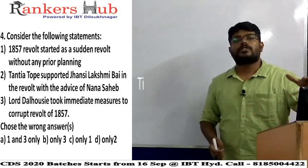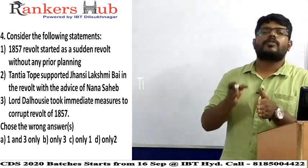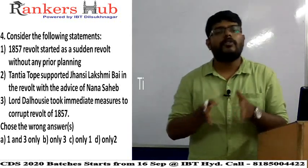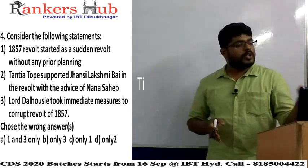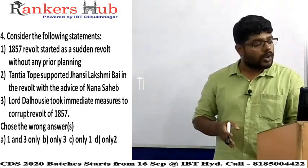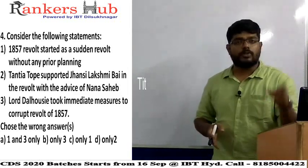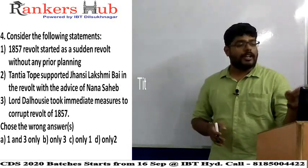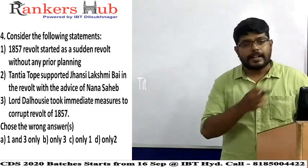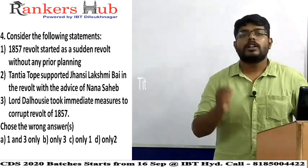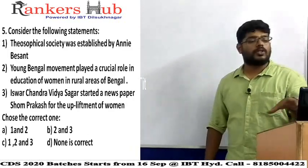Statement three is wrong because in 1856 Dalhousie was replaced by Lord Canning, and the 1857 revolt happened in the time of Lord Canning. So statements one and three are wrong. The options ask to choose the wrong answers: A) 1 and 3, B) only 3, C) only 1, D) only 2. The answer is A, 1 and 3. We should be very careful with movements related to the 1857 revolt.